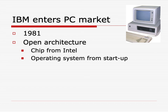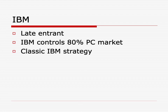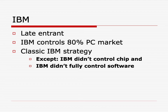Open architecture meant they were using a chip from Intel — one that other manufacturers could purchase — and an operating system from a small startup. That open architecture allowed other firms to produce compatible machines, growing the overall base of users so that network externalities would play in IBM's favor. Despite IBM's late start, by 1985 they became dominant with over 80% of the personal computer market, and it looked like that classic IBM strategy had worked again — let others introduce the product and then take over the market. However, there were two important differences: IBM didn't control the chip, and IBM didn't fully control the software. This turns out to be crucial for later developments, which we'll look at in a later video.